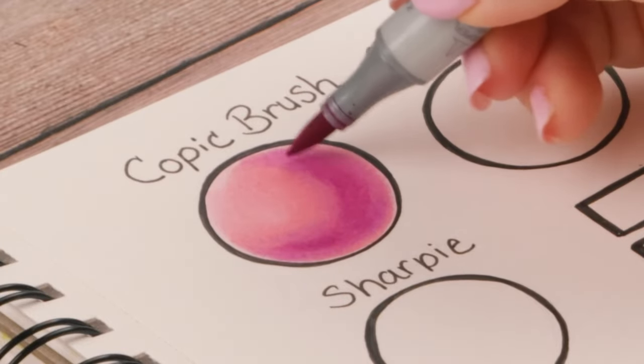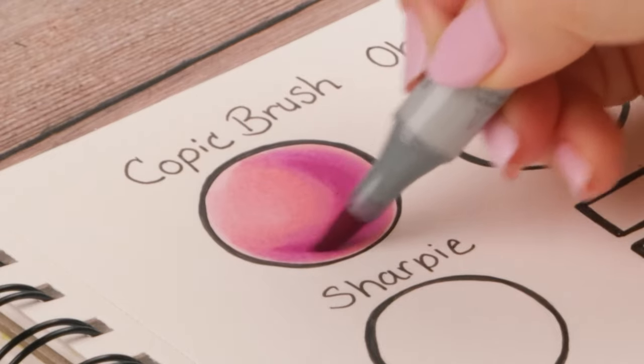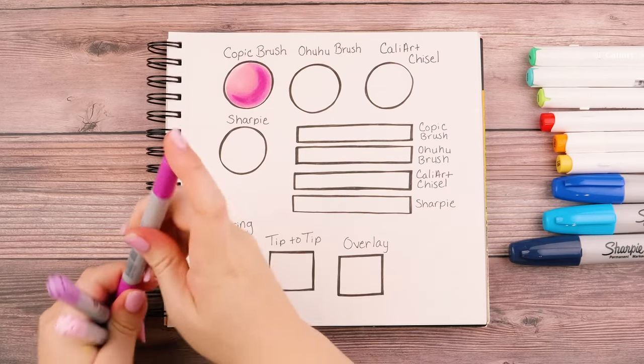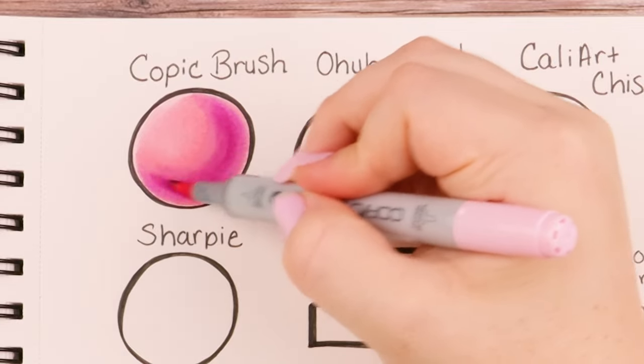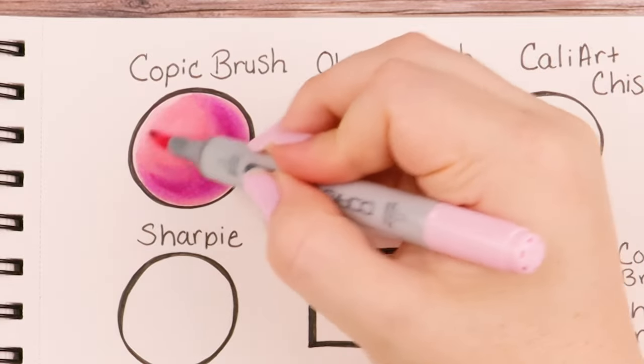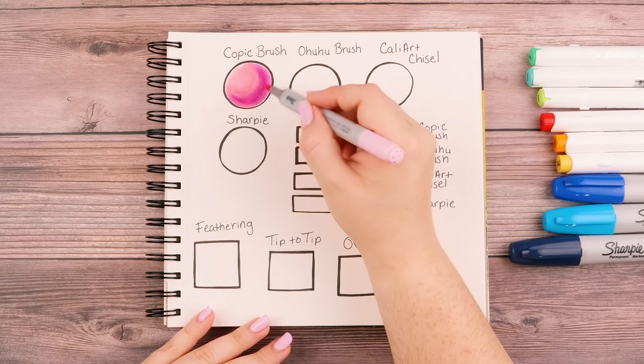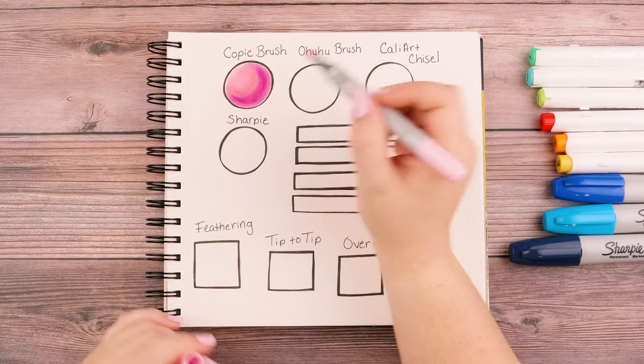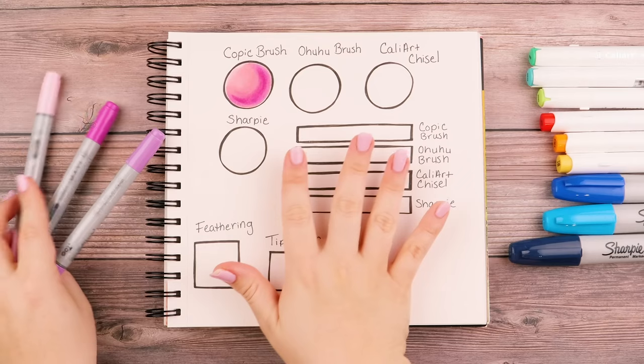Then when you finish with that, get your even darker color and color the edge again. With this color, you can see it's already sort of blending itself. That's because the ink is still kind of wet, so it just seeps right into it. I can blend it out further. I could probably take another color that's even darker and repeat the process, but I just want to get the general idea for right now. So that's the Copic.